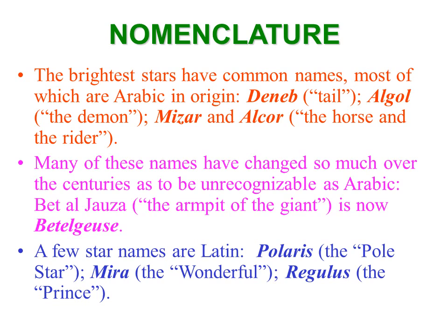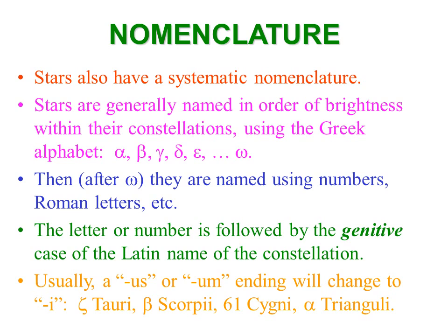For example, 'Bet al-Jawza' — the armpit of the giant — is now Betelgeuse, the first star mentioned in our talk, Orion's right shoulder, the big red star. Some other names are Latin, such as Polaris, 'the Polestar'; Mira, 'the Wonderful,' so called because it was shown to be a variable star that did not maintain constant brightness — a wonderful discovery in the 16th century. Regulus, 'the Prince,' is another Latin-named star in Leo, the Lion.